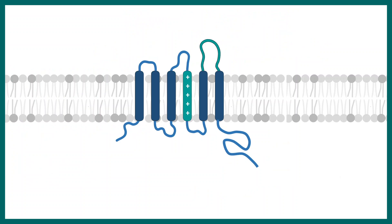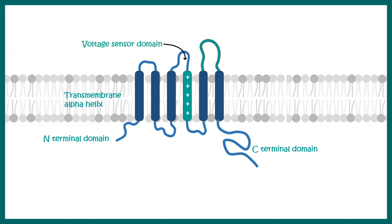Here is an overview of the potassium channel structure. We can see the N-terminal and the C-terminal. Inside the membrane there are several transmembrane alpha helices which contain the voltage sensor domain. The fourth helix is the voltage sensor helix, which has a lot of positively charged residues responsible for the voltage sensing mechanism. Between the fifth and the sixth helix there is a P-loop which harbors the selectivity filter.